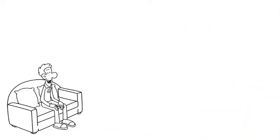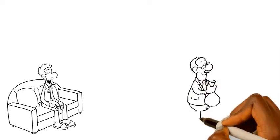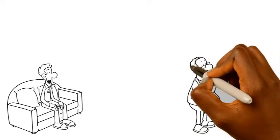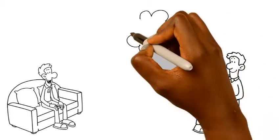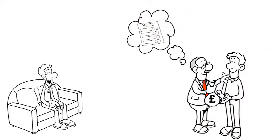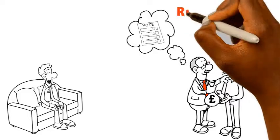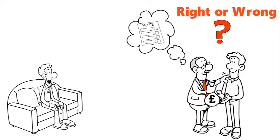Scenario 6. A candidate for a municipal chief executive MCE position promises a voter money or a job in the municipality if he or she votes for him. Is that right or wrong? Why is he right or wrong? What is the offense if he is wrong?